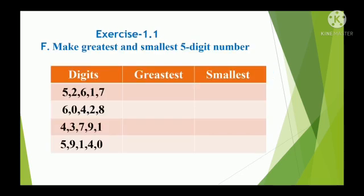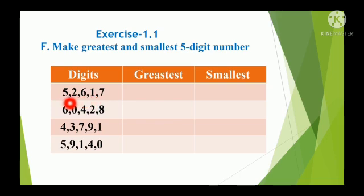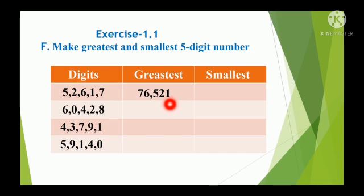Exercise 1.1f: Make the greatest and smallest 5-digit numbers. Digits are given, and by using these digits we have to form the greatest and smallest numbers. When making the greatest number, arrange the digits from big to small. So, for digits 7, 6, 5, 2, 1: the greatest number is 76,521.